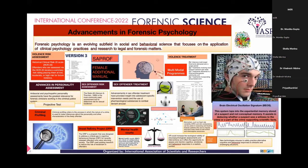Moving on to sex offender risk assessment, which is very similar to violence risk assessment. They are using various tools like Static-99, which has been updated to Static-2002. There are other scales like the Violence Risk Scale Sexual Offender and the Structured Risk Sexual Offender Assessment. They found that there are three major constructs predictive of sexual recidivism that must be considered in all these tests.